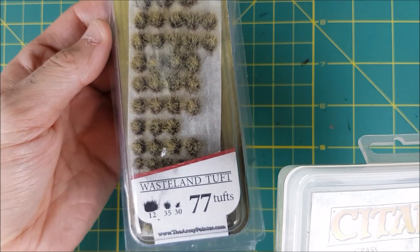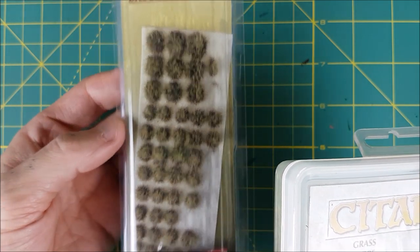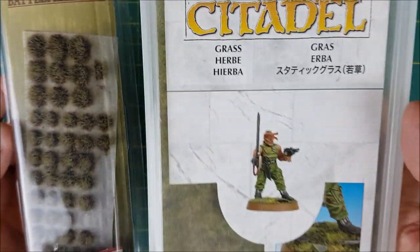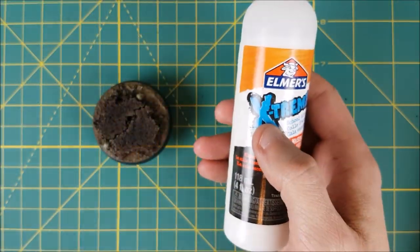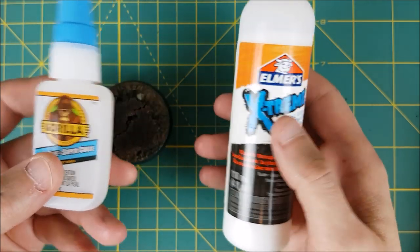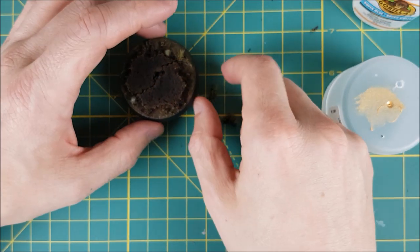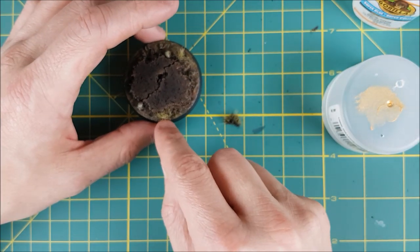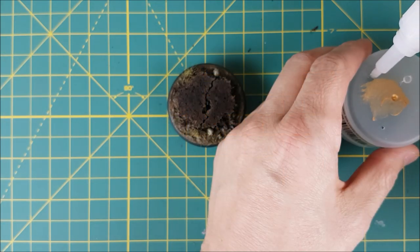The final steps for this base involve adding flock. I'm going to be using two different kinds of grass. These are Wasteland Tufts from Army Painter and Citadel Grass. I'm going to be using PVA Glue for the Citadel Grass and Super Glue for the Tufts. After cutting the Tufts into smaller pieces, I'm going to figure out where I want them to go and then dip them in Super Glue to attach them.